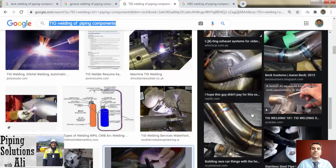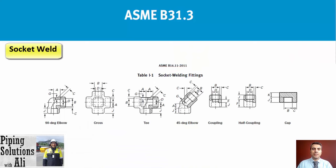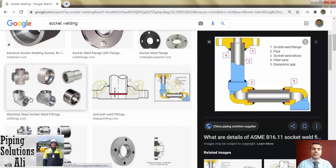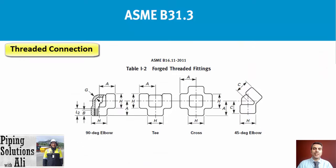For socket weld connections, the fitting has a socket with an inner diameter that is ever so slightly larger than the pipe's outer diameter. The pipe is inserted into the socket and welded around the rim. Socket weld connections are usually reserved for small sizes and are permanent connections that are reliably leak-free.